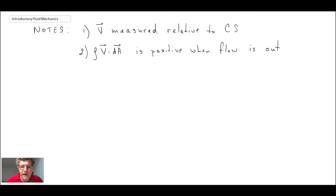And what we can say is that v.da or rho v.da is positive when the flow is out, and we have the dot product here, and so it makes sense in terms of the math of the dot product.